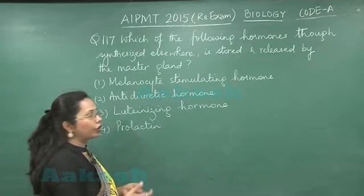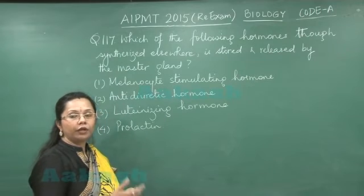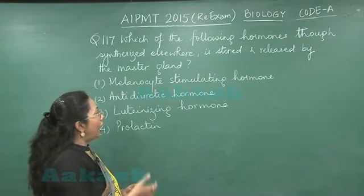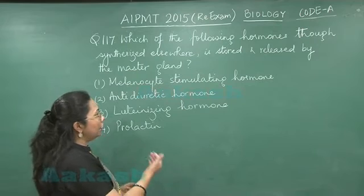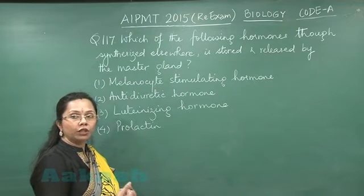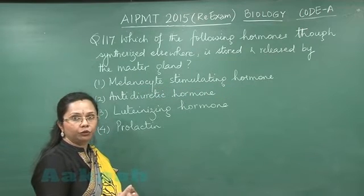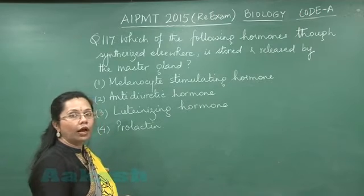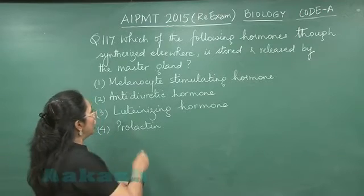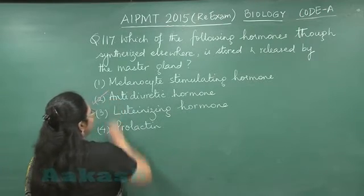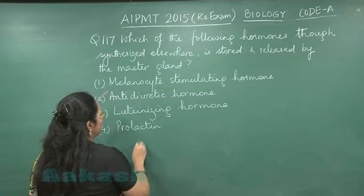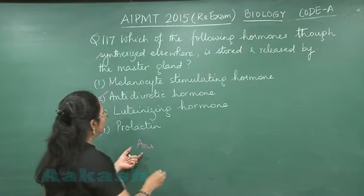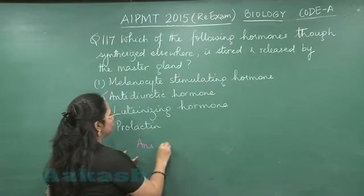Out of these, antidiuretic hormone (ADH) is synthesized by the hypothalamus and then passes on to the posterior lobe of the pituitary — the neurohypophysis — where it is stored and released. So the answer would be ADH, because it is not directly synthesized by the pituitary, but is released from there.